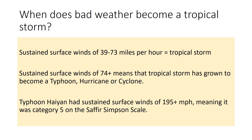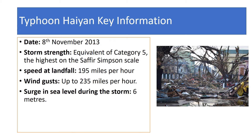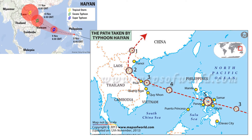Typhoon Haiyan had sustained surface winds of 195 miles an hour, meaning it was Category 5 — the highest category on the Saffir-Simpson scale used to measure tropical storms. In fact, it was off the scale the winds were so strong. Gusts reached up to 235 miles an hour, pushing the sea into the coastline and creating a storm surge six meters high — about the height of our school building. You can see the storm was at its most powerful as it struck the Philippines. As the storm hits land it loses power because it no longer has the evaporation of warm water to fuel it.